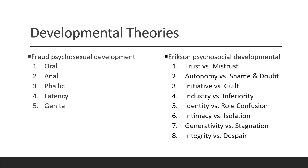The Oedipus Complex is when boys begin to develop an unconscious sexual attraction to their mother and perceive their father as a rival for the mother's attention. The Electra Complex is the same for girls — girls develop sexual attraction unconsciously toward their father and their mother is viewed as a competitor for the father's affection. The Latency stage is ages 6 to 12, during which children are seen as suppressing their sexual desires toward more socially acceptable activities. The Genital stage begins with the onset of puberty and lasts throughout adult life.